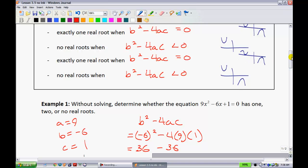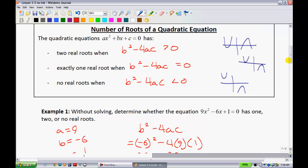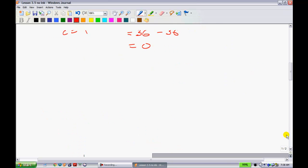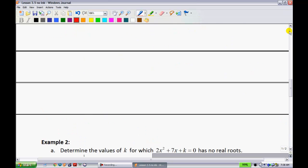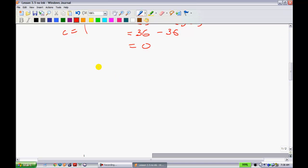Now looking up on that chart that I had before, it's plain to see that when we have it equal to 0, we can say that we have exactly one root. So therefore, there is exactly one root. And again, that's simply just because it was equal to 0.